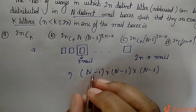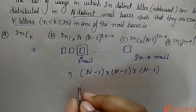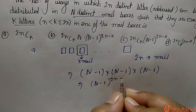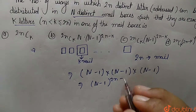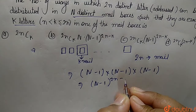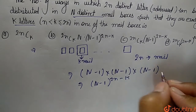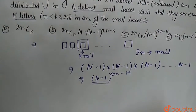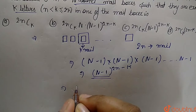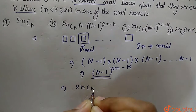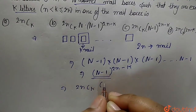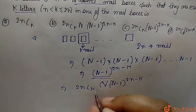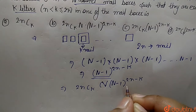So we will have n to the power of 2n minus k for the remaining letters. Simplifying this, we can write the function as 2nCk × n × (n−1)^(2n−k). That is: choose k letters from 2n for the special mailbox (2nCk), choose which of the n mailboxes has exactly k letters (×n), and distribute the remaining 2n−k letters among the other n−1 mailboxes (×(n−1)^(2n−k)).